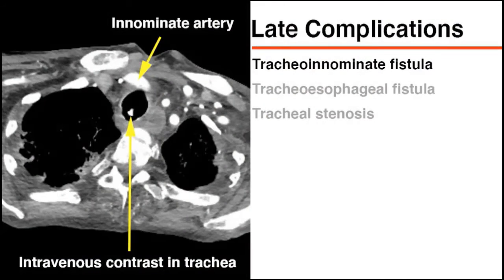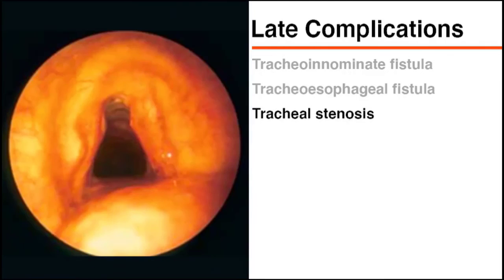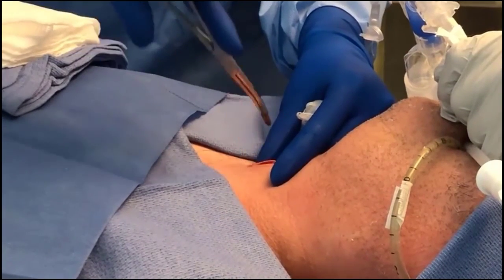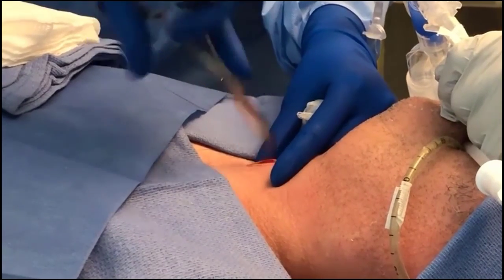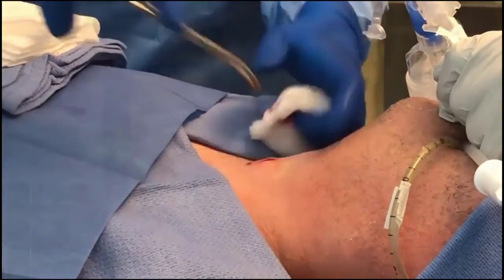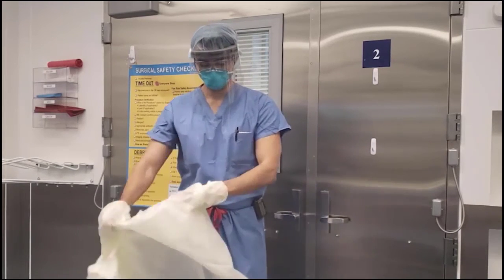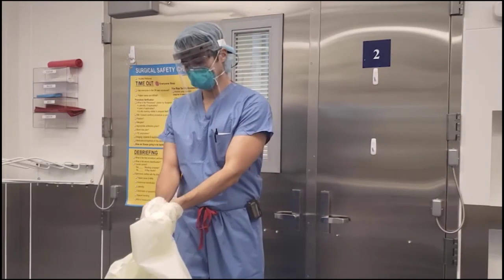Late complications after tracheostomy include tracheoinnominate fistula, tracheoesophageal fistula, and tracheal stenosis. The development of fistulas is a rare complication that requires surgical consultation. Percutaneous tracheostomy can be safely performed at the bedside in patients with a prolonged need for mechanical ventilation. In patients with COVID-19, this procedure can be modified to minimize aerosol generation and exposure to staff.